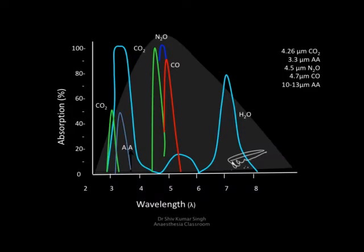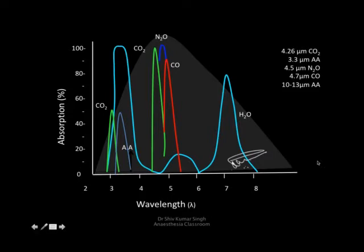If you look at the absorption spectrum of the gases we monitor: carbon dioxide is maximally absorbed at 4.26 micrometers, anesthetic agent at 3.3 micrometers, nitrous oxide at 4.5 micrometers, and carbon monoxide at 4.7 micrometers. Anesthetic agents are also absorbed at the further range of 10 to 13 micrometers — so 3.3 and 10 to 13 micrometers as well.